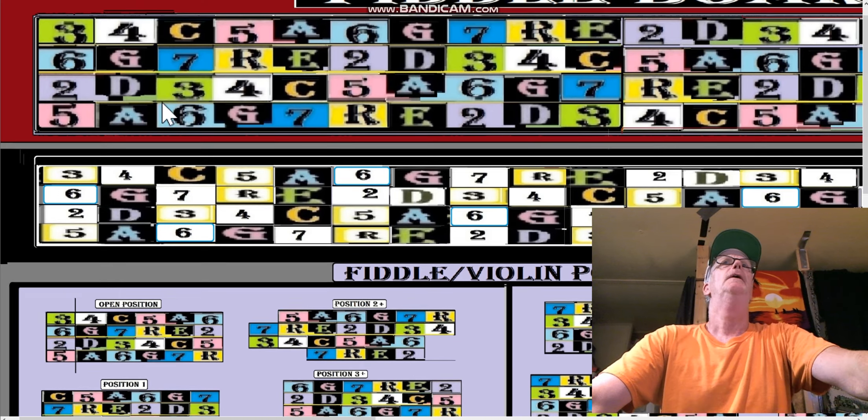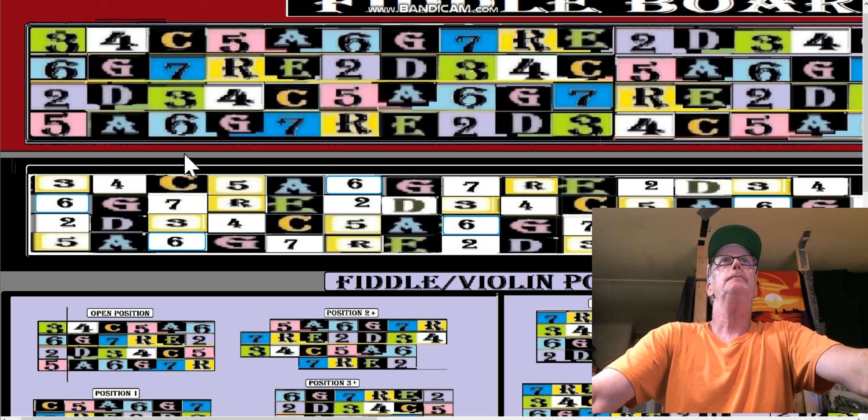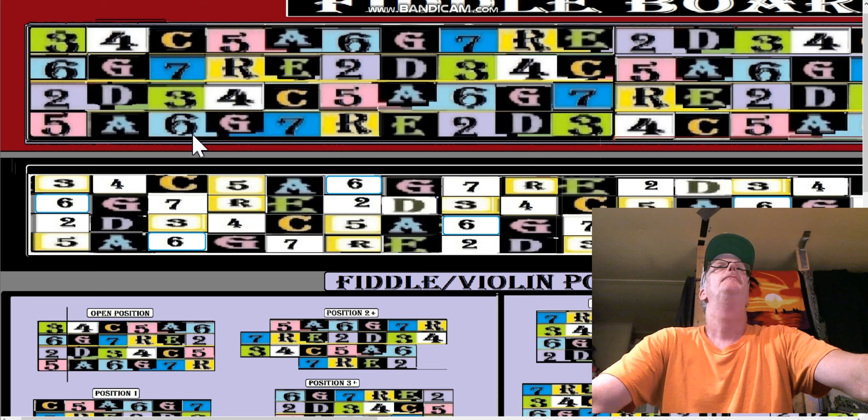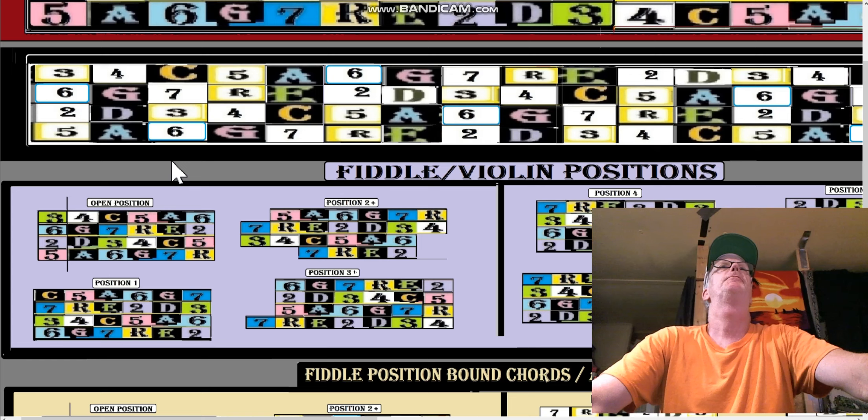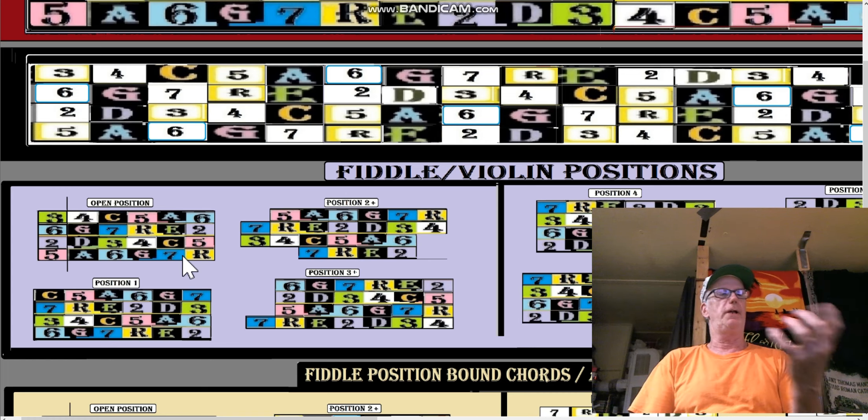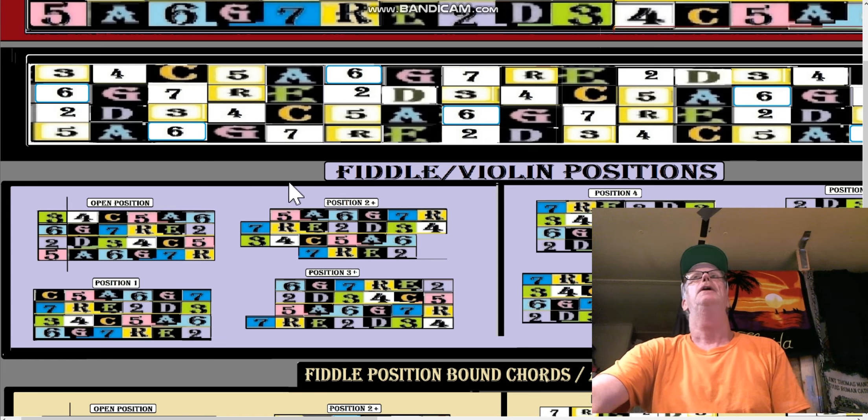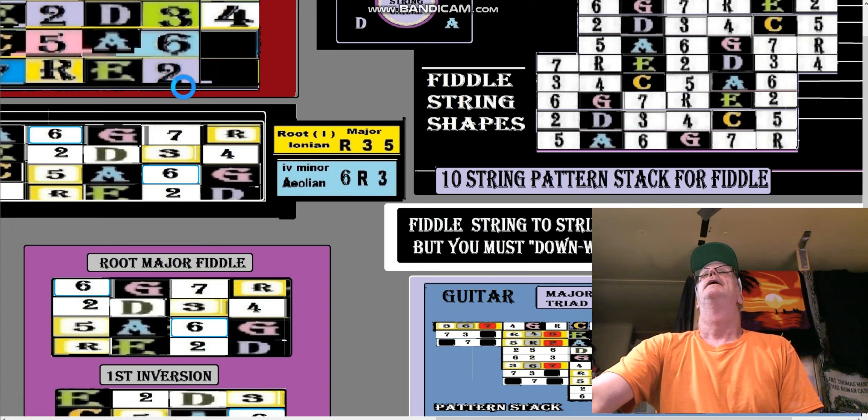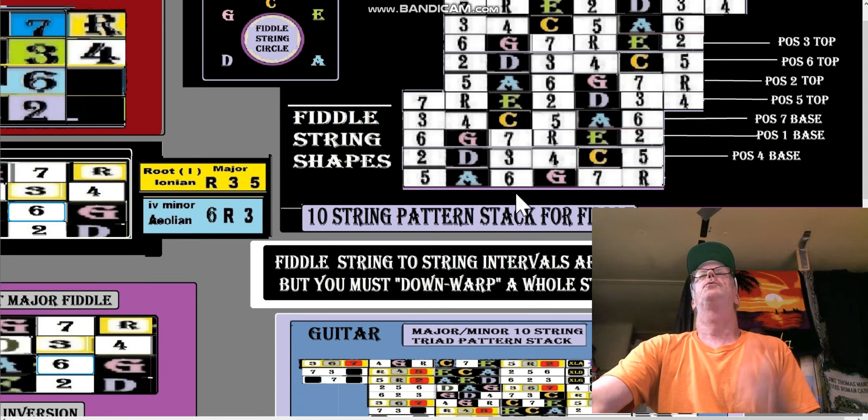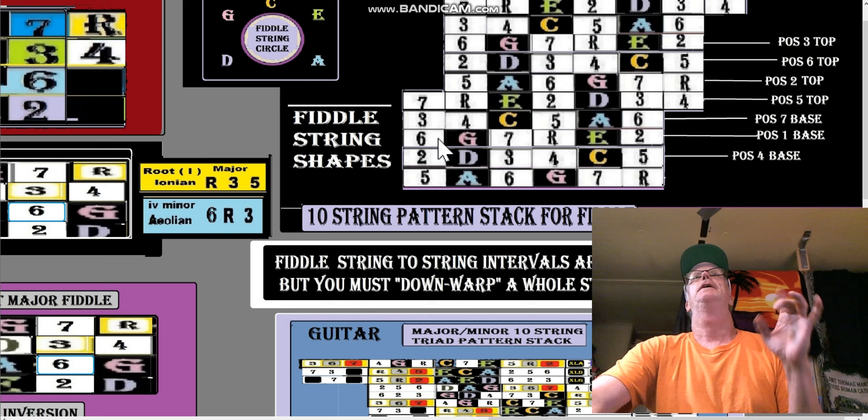Position one, position one is away from the fiddle nut, okay, but there's still an open position. They call it the half position. I call it open position. And the reason why they call it half position is because you don't have to use your finger to get the first note. And this is what violinists are calling the positions, is where your fingerings go. So these are all made to be fingered in four notes.